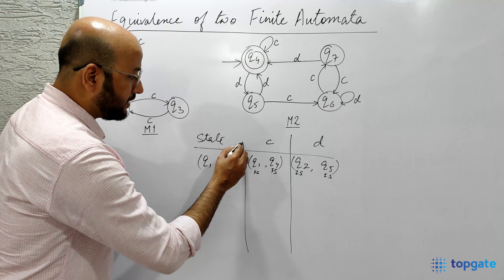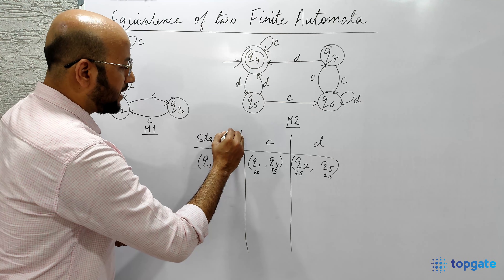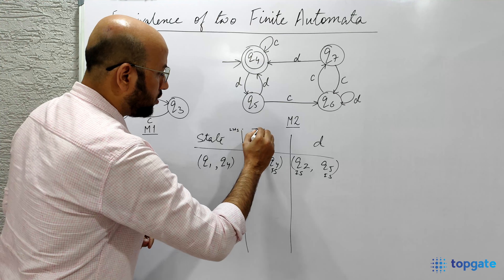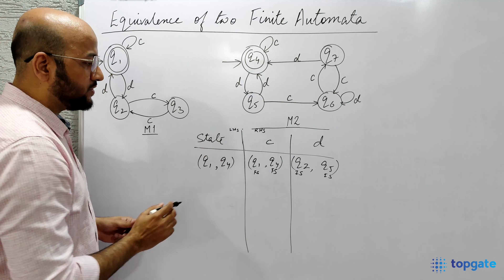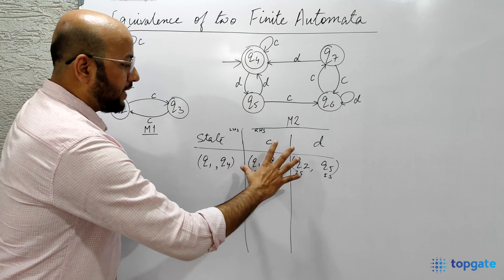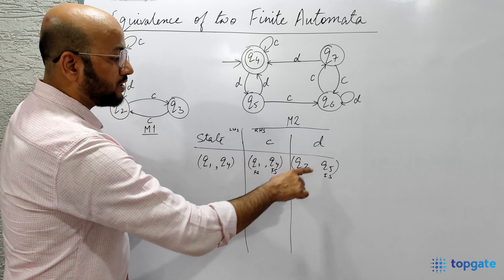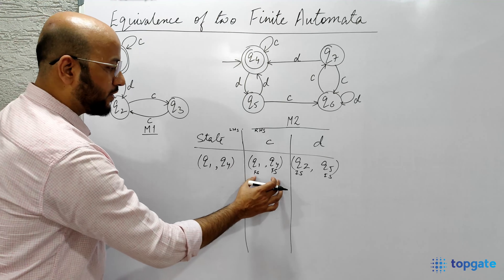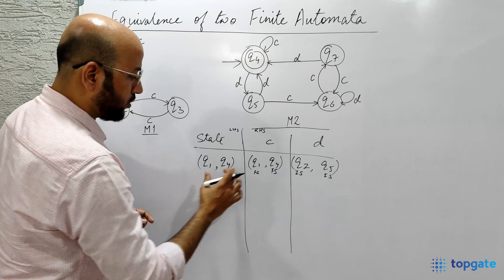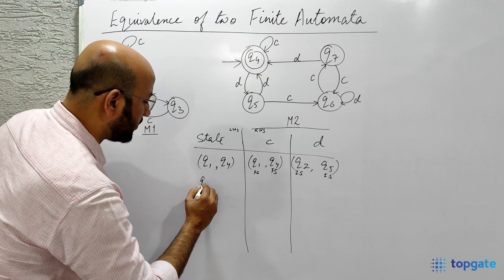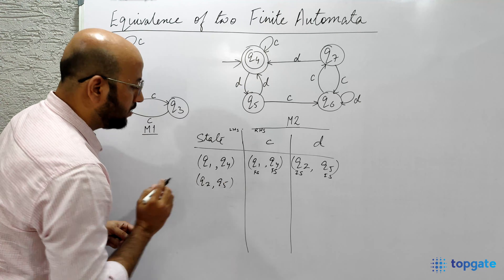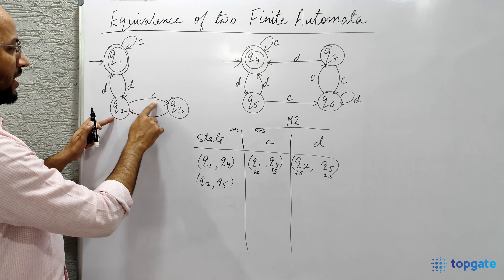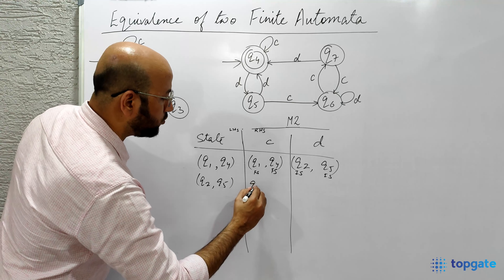In this table, the left-hand side contains our explored pairs and the right-hand side contains the resulting transition pairs. Every pair appearing on the right-hand side should also appear on the left-hand side. Q1, Q4 is already there. Q2, Q5 is not, so the next pair to explore is Q2 and Q5. From Q2 with input C, we move to state Q3, and from Q5 with input C, we move to state Q6.